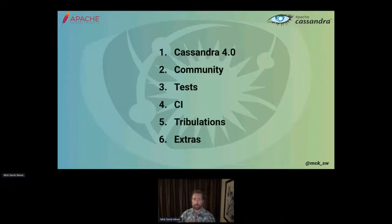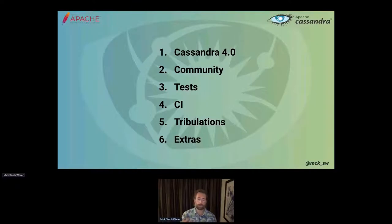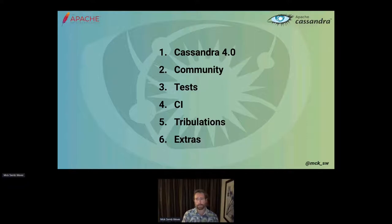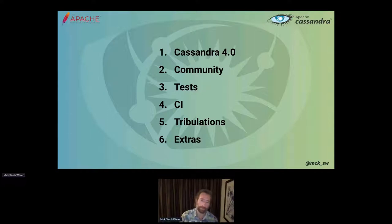The breakdown of this talk is roughly six sections: how Cassandra 4.0 has changed our CI needs, its importance to the community, the tests that we have, how they're set up in different CI systems, then a longer run through of all the challenges we've had along the way, and some of the extras we've tacked on to deal with those challenges.